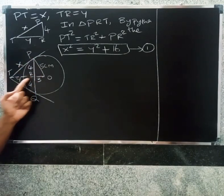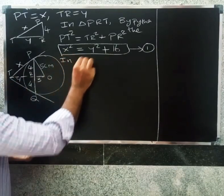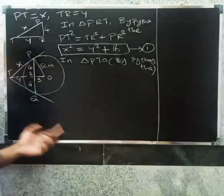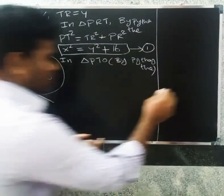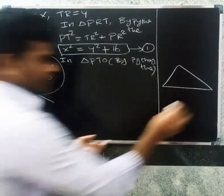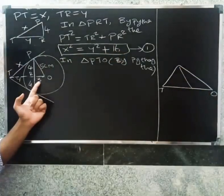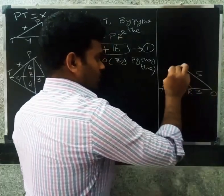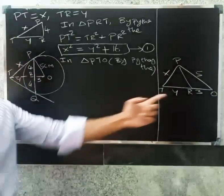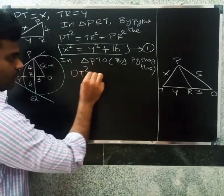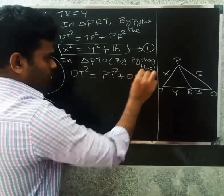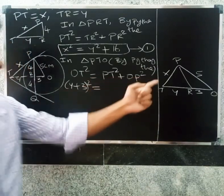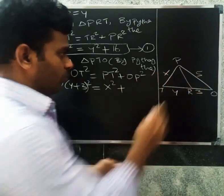In triangle PTO, again by Pythagoras theorem, OT is the hypotenuse. OT equals OR plus TR, so OT equals 3 plus y. Therefore: OT squared equals PT squared plus OP squared. So y plus 3 the whole square equals x squared plus 5 squared, which gives (y+3)² equals x² plus 25. That is equation two.